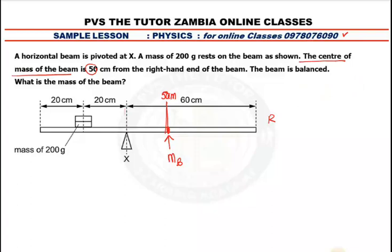So this is the mass. Mass A is 200 grams. Distance A is the distance of this mass from the pivot, which is 20 centimeters. Some of you would want to convert grams to kilograms and centimeters to meters — you don't have to do that. Since it's a balanced equation, anticlockwise moment equals clockwise moment, you don't need to convert unless they ask you to find the moment directly.